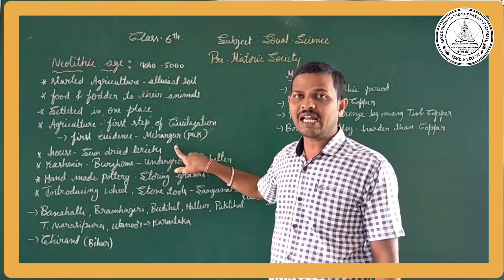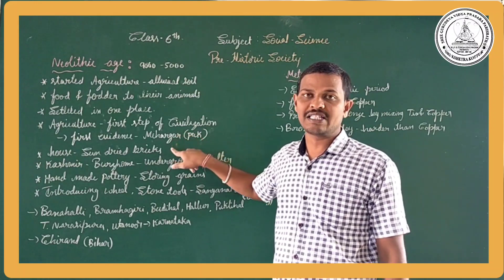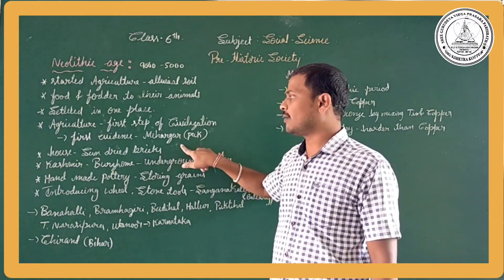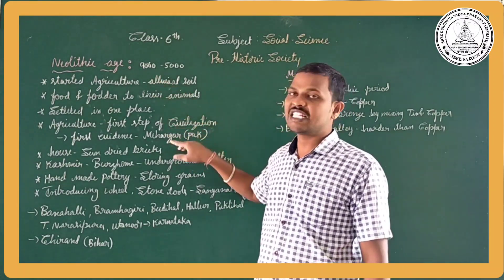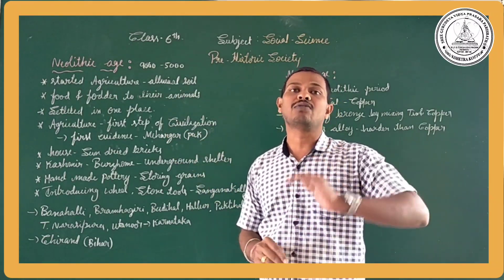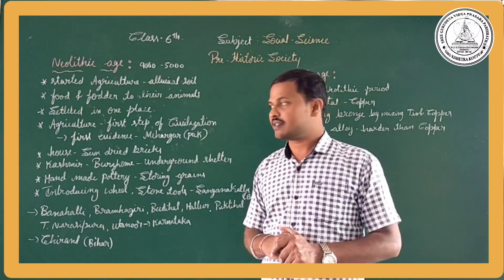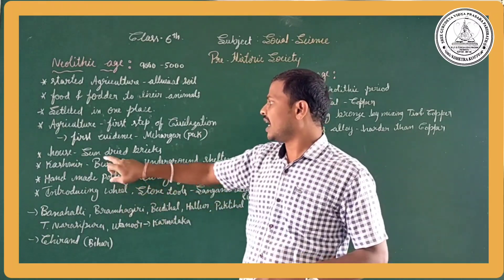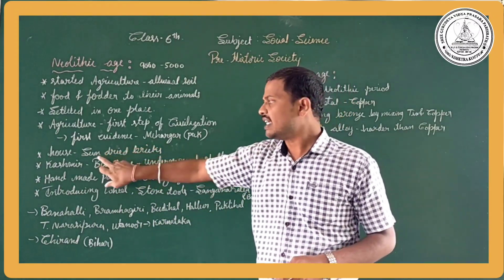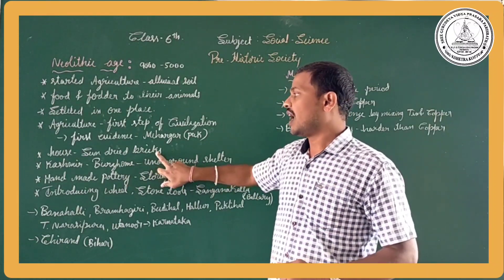The first evidence of agriculture we got is at Mehrgarh, which is specially found in Pakistan. Neolithic age people also started to build huts and houses. They built houses using sun-dried bricks.